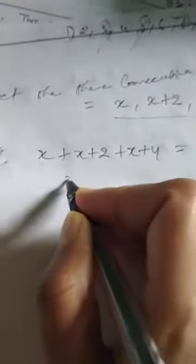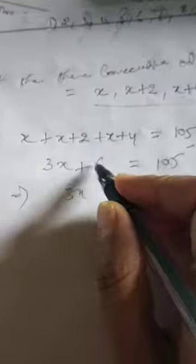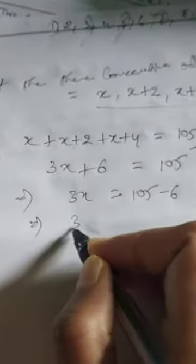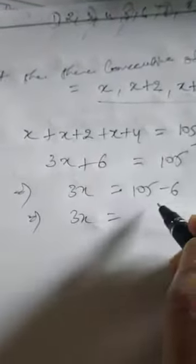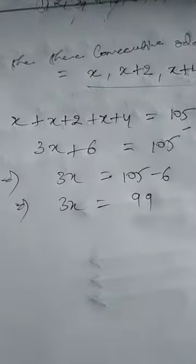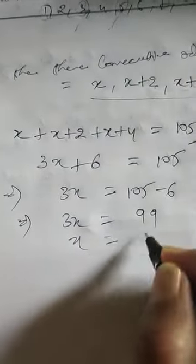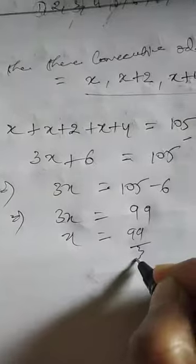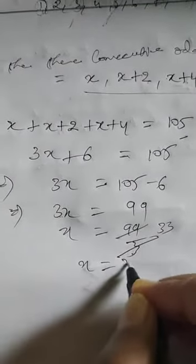According to the question, the sum of these odd numbers is equal to 105. Adding: x plus (x+2) plus (x+4) gives 3x plus 6 equals 105. So 3x equals 105 minus 6, which is 99. Therefore x equals 99 divided by 3, which is 33.